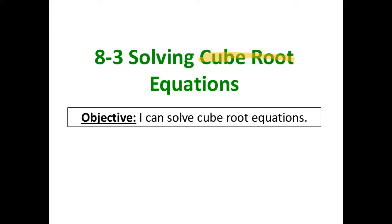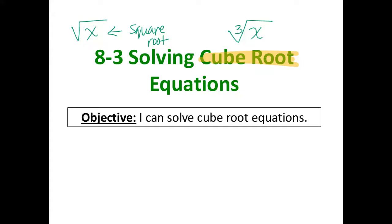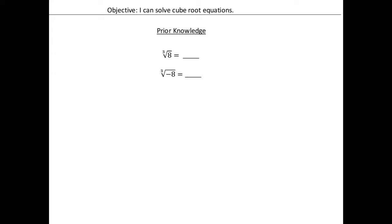So for today, we're going to be solving cube root equations. The cube root equations are the ones that have the 3 instead of just the square root. Cube roots have the little 3. The ones without the 3 are square roots, which we learned about in lesson 2. The cube root of x with the little 3 — those are the cube root equations. Our objective says: I can solve cube root equations. They're very similar to the square root; it's just one step that's different.